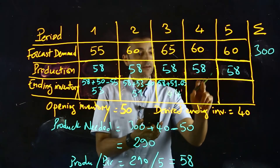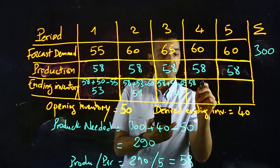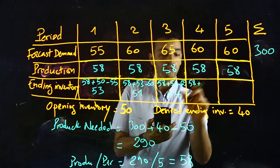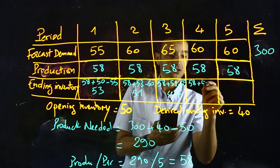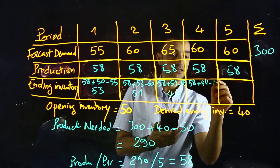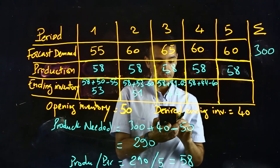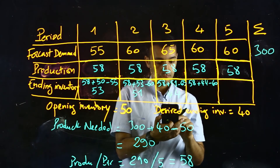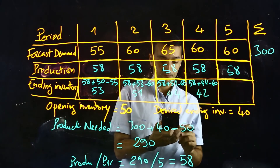For period 4, the production is 58 plus the opening inventory — which is the ending inventory of the previous period — which is 45, minus the forecast demand of 60. The result is 43.